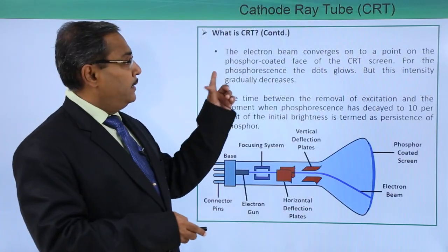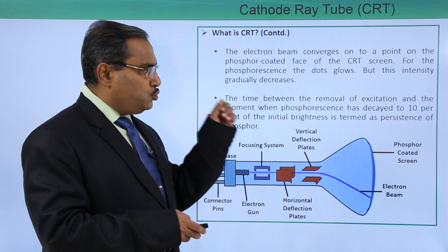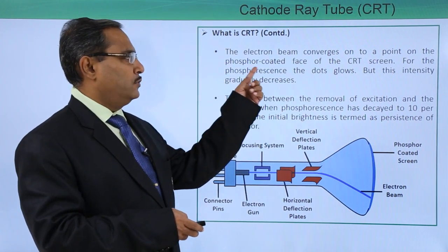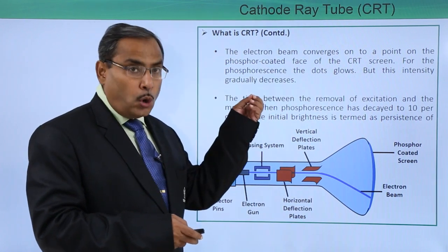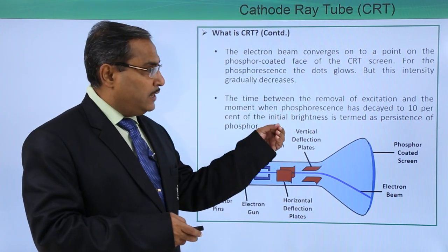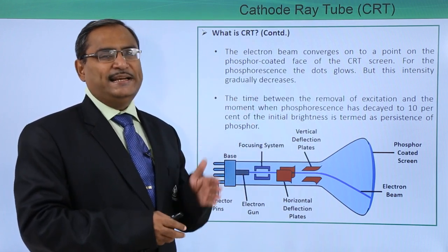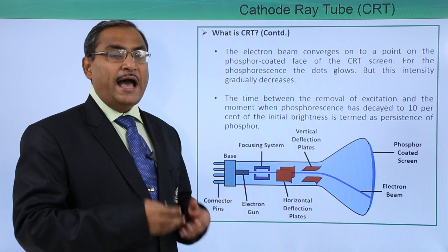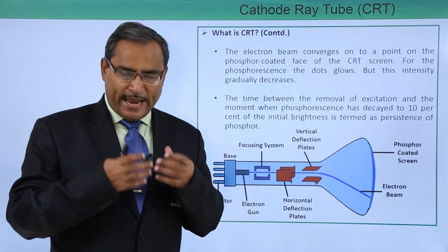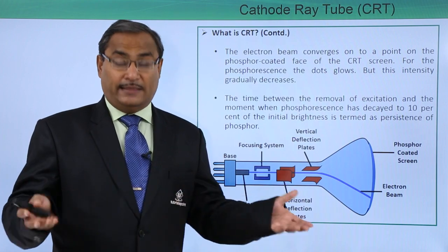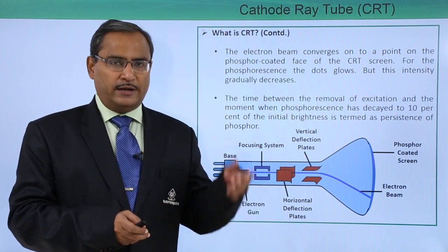The electron beam converges onto a point on the phosphor-coated face of the CRT screen for phosphorescence — that dot glows — but unfortunately this intensity gradually reduces over time. That is why each phosphor must be re-excited after a certain rate, which is actually called the refresh rate, as discussed in our earlier videos.